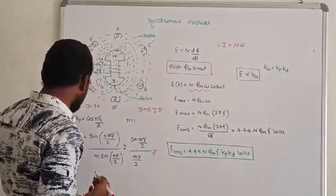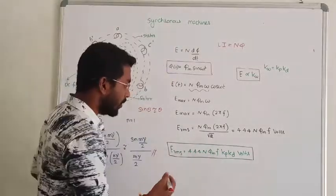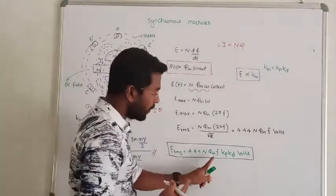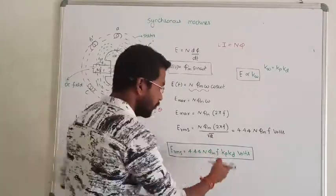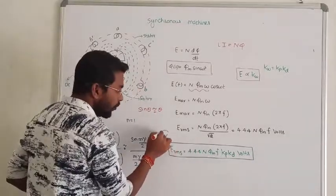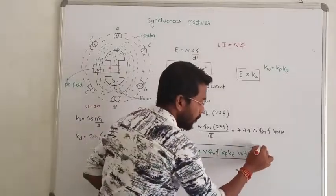Substitute the distribution factor and pitch factor into the EMF equation. The resultant EMF equation becomes 4.44 times N times phi_max times frequency times kp times kd. That's how we obtain induced EMF in synchronous machines.